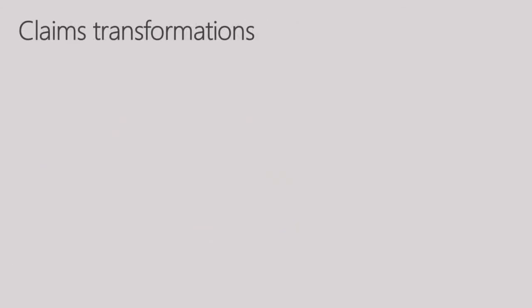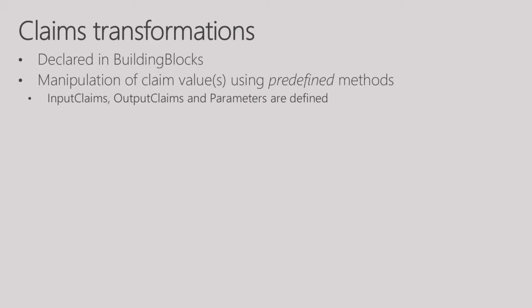Let's go through claims transformations. The previous output claim example I showed — we refer to that as claim mapping, essentially mapping one claim to a different claim with no manipulation of values. Claims transformations give you a way to manipulate the values. It is declared in the building block section and manipulates claim values using some predefined methods that are part of IEF. IEF has maybe 10 to 15 claims transformation methods that are well defined. Only those methods can be used — you cannot write random code.